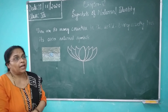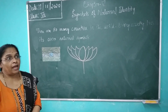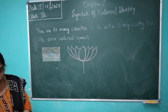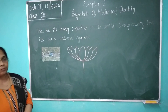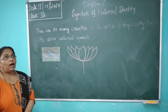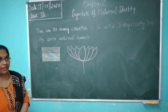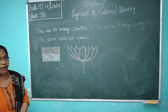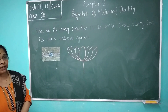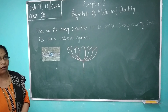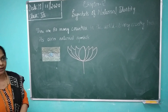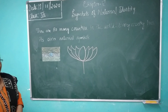The next symbol is the national emblem, that is the Ashoka Chakra. The Ashoka Chakra has 24 spokes and is a symbol of unity and prosperity.